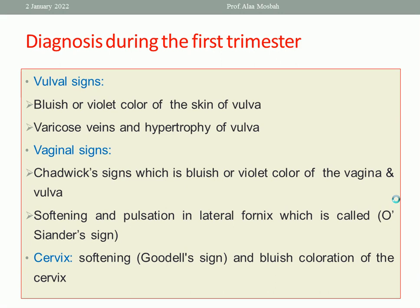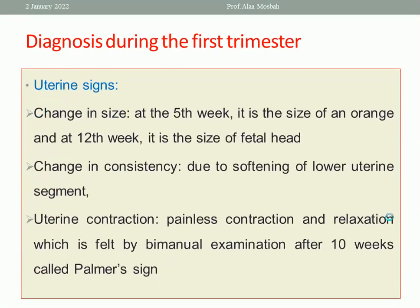What are the vulval signs during examination? The vulva becomes violet or bluish in color, there may be varicose veins, and also there is hypertrophy of the vulva. The violet discoloration of the vulva and vagina is called Chadwick's sign. Also in the vagina, there is softening and pulsation in the lateral fornix, and this pulsation is called Osiander's sign. The cervix becomes more soft — this is called Goodell's sign — and also becomes violet or bluish in color, like Chadwick's sign.